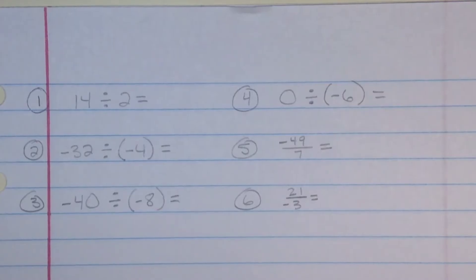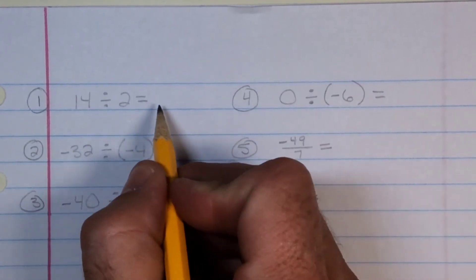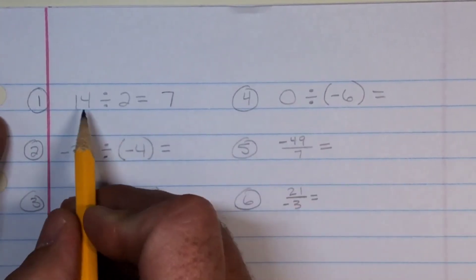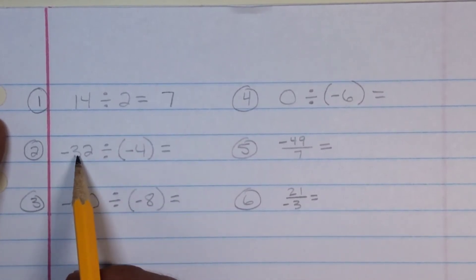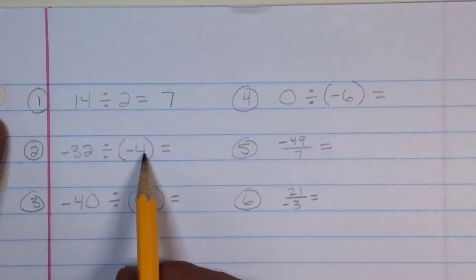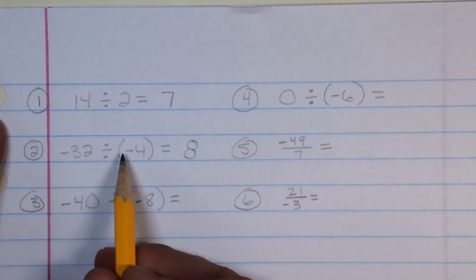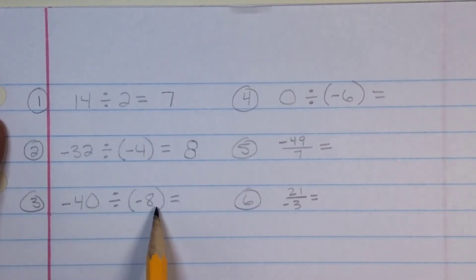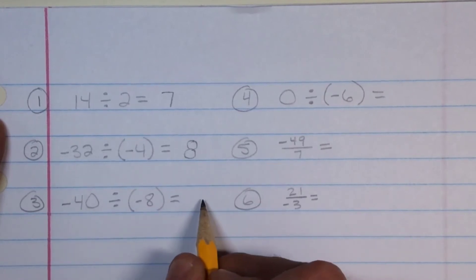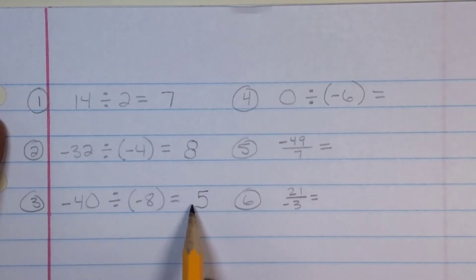Number one: 14 divided by 2 is 7, and they're the same sign, so it's just positive 7. Number two: negative 32 divided by negative 4 — 32 divided by 4 is 8, same sign, so it's positive 8. Number three: 40 divided by negative 8 — 40 divided by 8 equals 5, different signs, so it's negative 5.